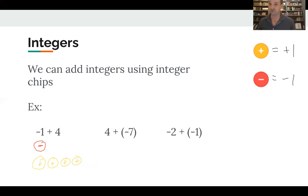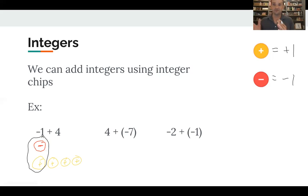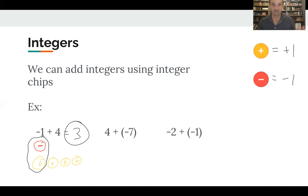For negative one plus four: I have one red negative chip and four yellow positive chips. When I pair a negative one and a positive one, they form a zero pair — the positive and negative balance each other out with no effect. My answer is the three remaining positive chips, so the answer is three.